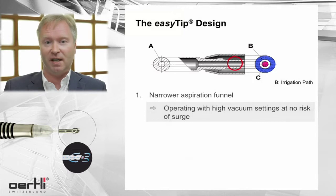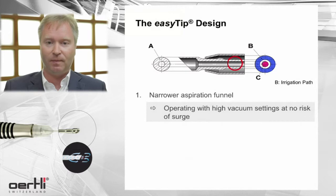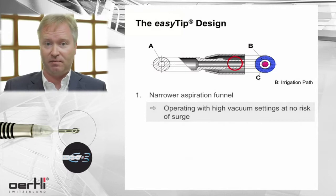You do not have to be afraid of surge at all. On the other hand, if you do have a narrower aspiration funnel, active aspiration is not affected by this. So you can apply very high vacuum settings.